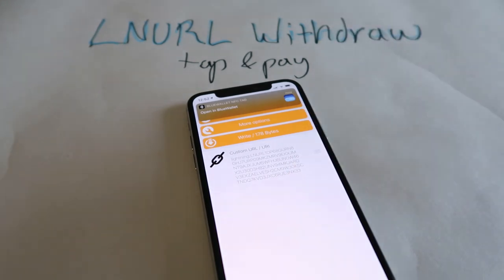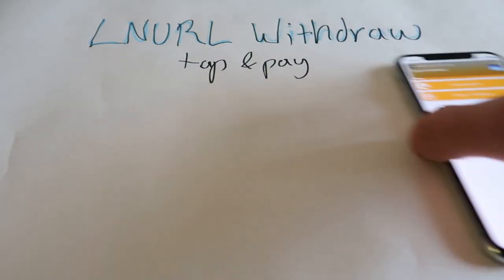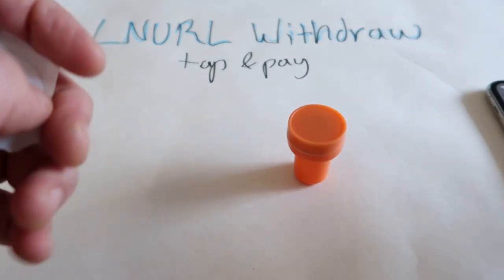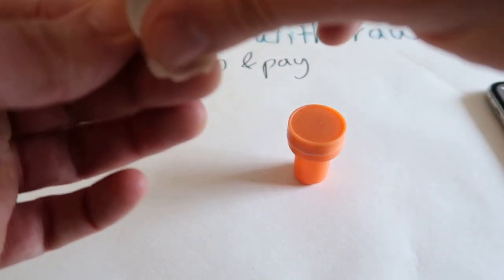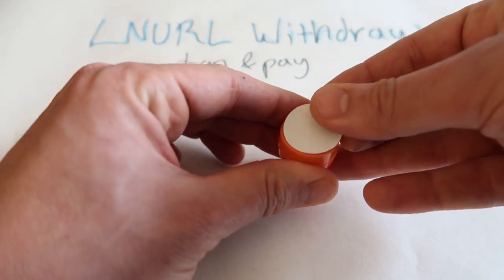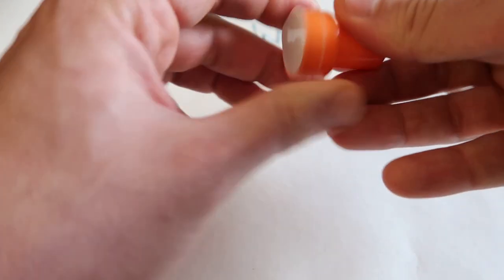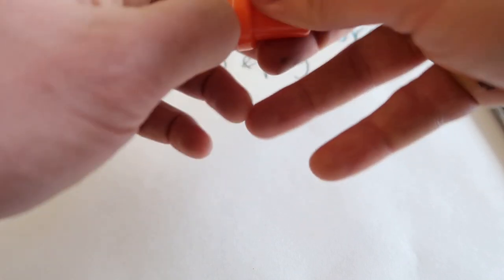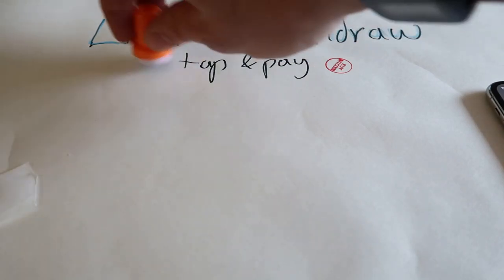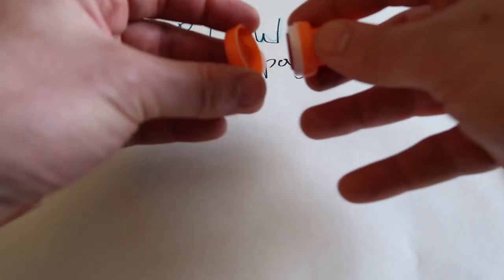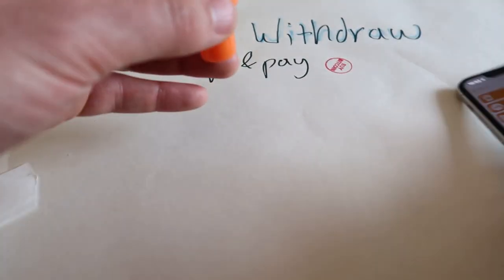Now we're going to take our sticker and I'm going to stick it onto one of my Buy Bitcoin stamps. So I've got my little Buy Bitcoin stamp, and this is going to have the same functionality as my bank card. I've put that NFC tag on there.